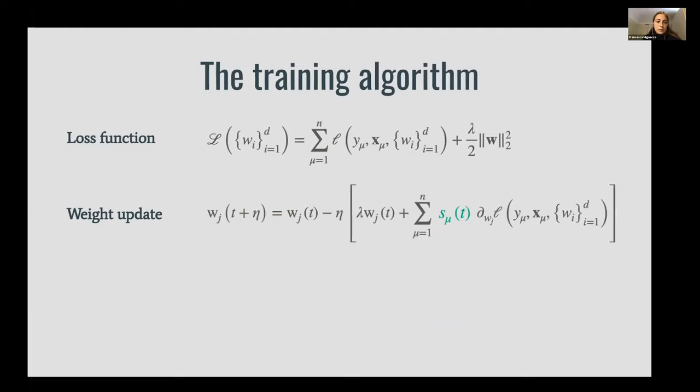The training algorithm is the following: we learn the training vector through the empirical risk minimization of this loss function L. We have a loss function summed over all the samples and a ridge regularization term. This is a variant of the model that Lenka explained, the spherical p-spin. Instead of adding a spherical constraint, the regularization is a fixed parameter that can be tuned by cross-validation.